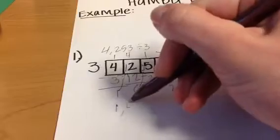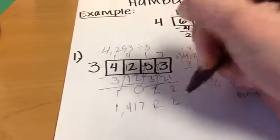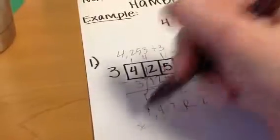So our answer is 1,417 with a remainder of 2. And they can check that by multiplying it by the divisor.